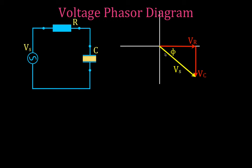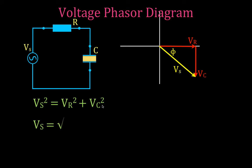We have a right triangle, and we would typically know VR and VC. Therefore we can calculate VS using the Pythagorean theorem, which tells us that VS squared equals VR squared plus VC squared. Taking the square root of both sides, we get VS equals the square root of VR squared plus VC squared. This is the equation we use to calculate the voltage of the source.